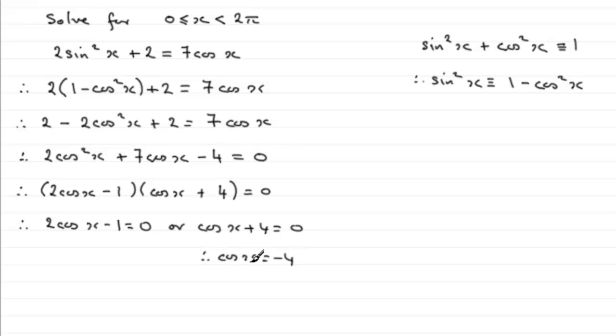If you were to try on your calculator x equals the inverse cos of -4, you'll get most probably a maths error. So therefore what we have here is no solution on this one. But if we look at 2cosx - 1 = 0, if we were to add 1 to both sides we get 2cosx = 1, and then if we were to divide both sides by 2 you end up with cosx equaling a half. Now we can solve this.